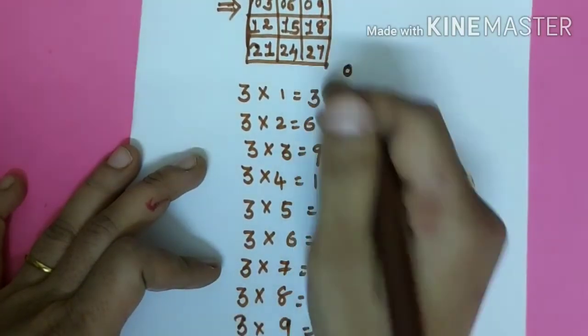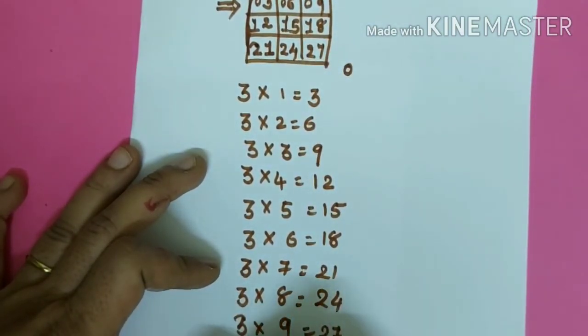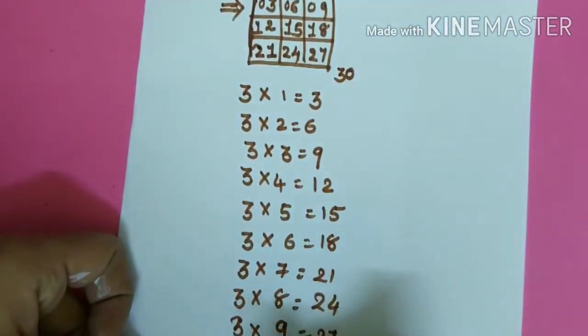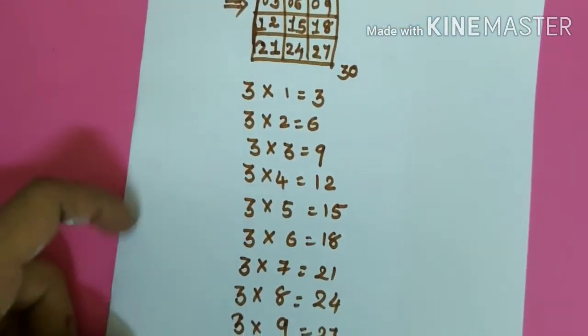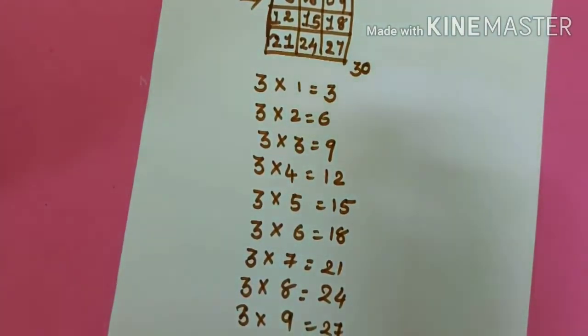Three nines are twenty-seven. And at last three tens are thirty. Isn't it very easy?